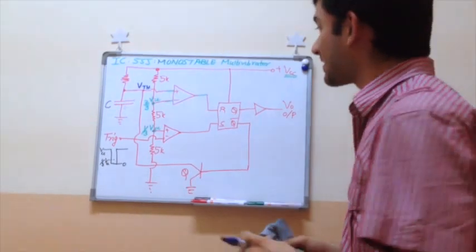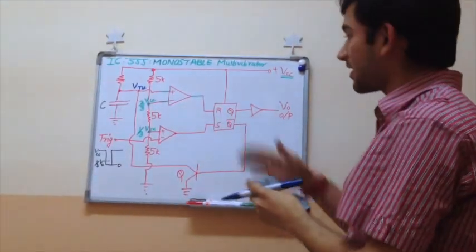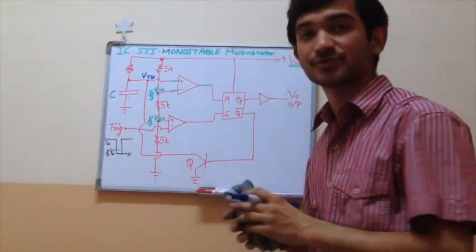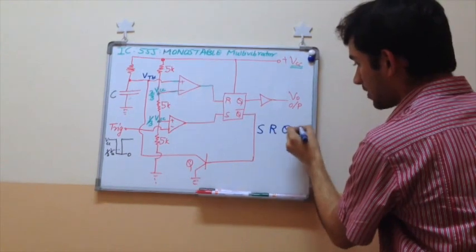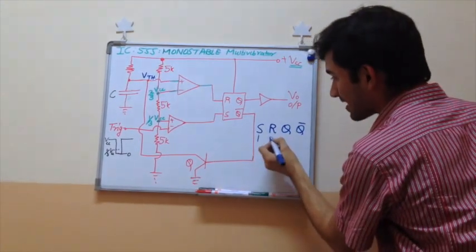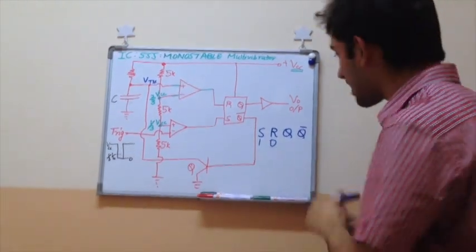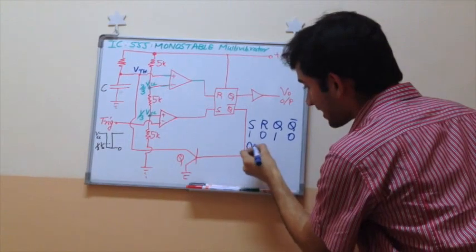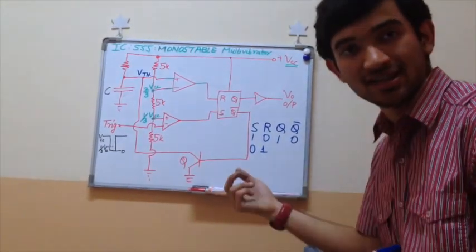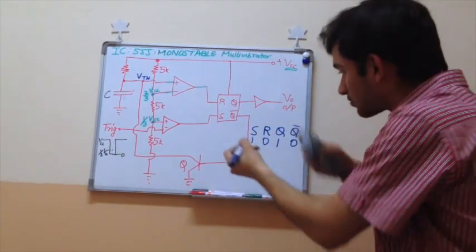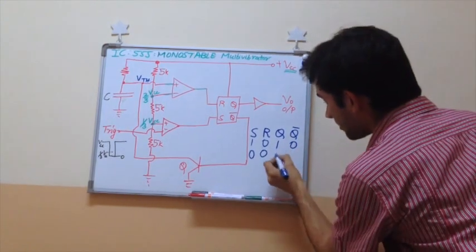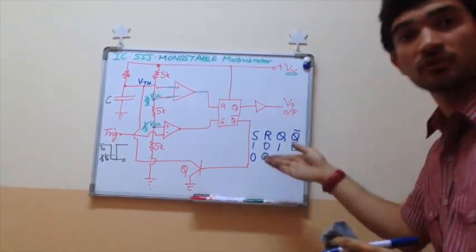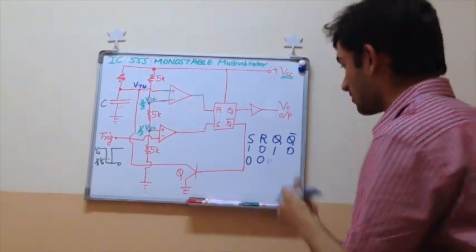How does an SR flip-flop work? An SR flip-flop works on 2 inputs and correspondingly has 2 outputs: Q and Q bar. The two inputs are S and R — S stands for set, R stands for reset. The truth table states: when S=1 and R=0, the output is set and Q=1, Q bar=0. Next, if S turns from 1 to 0 and R still remains 0, my circuit will have no change — whatever was there, it stays. If the output was 1, it stays 1; if the output was 0, it stays 0.